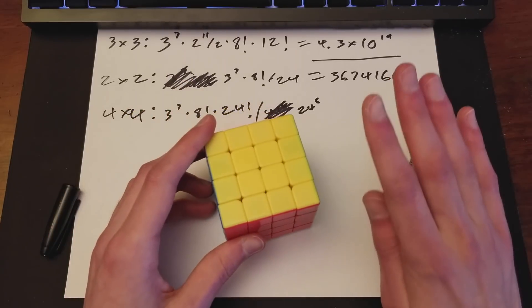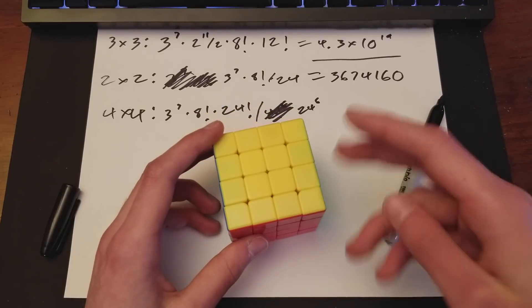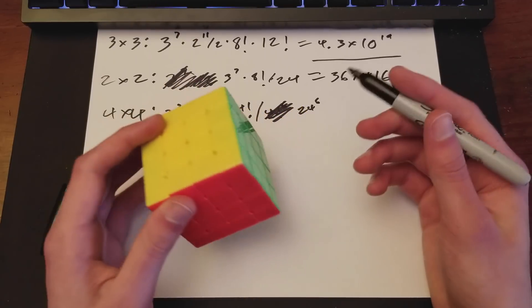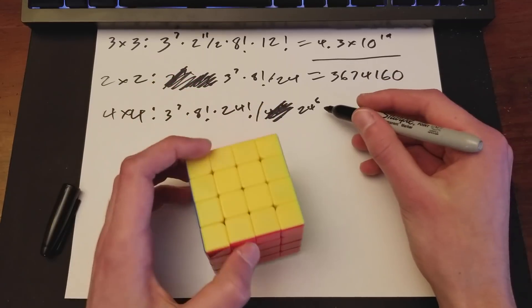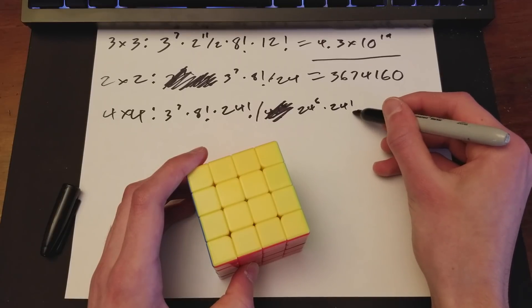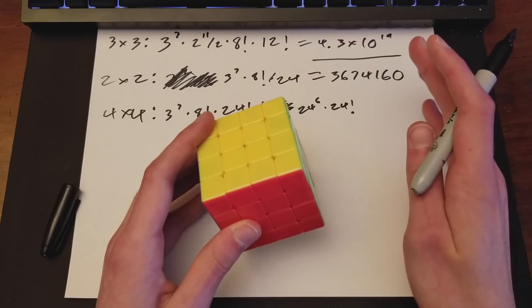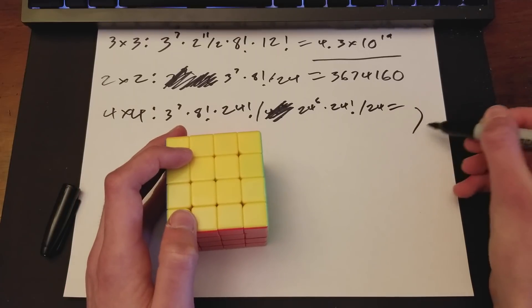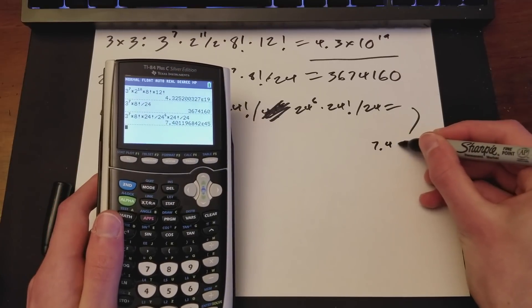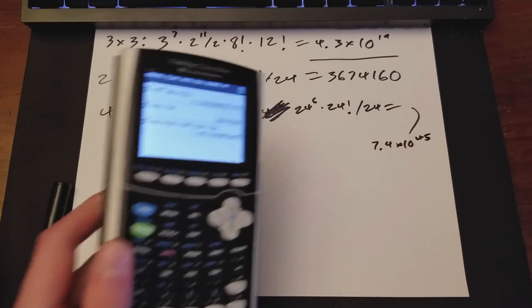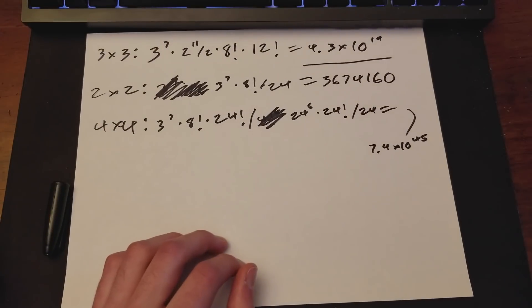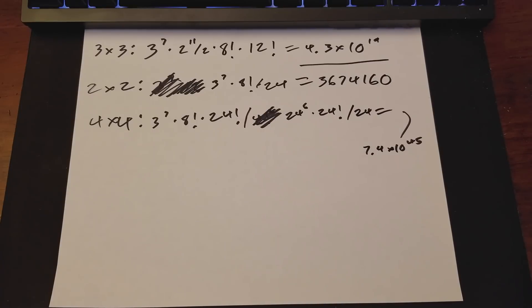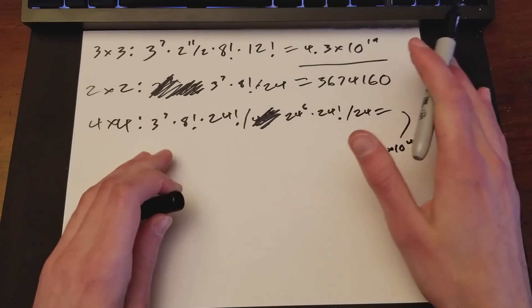So just like for edges and corners, you just do that number factorial to figure that out. But here's the catch. Each of these pieces are the same. So basically, like swapping these two, or swapping these two, that's the same position. Technically, based on the colors. So you need to account for that by dividing by 4 factorial. Because let's say this piece can go in any of the 4. This can go in any of the 3 remaining. So you just divide by 4 factorial.